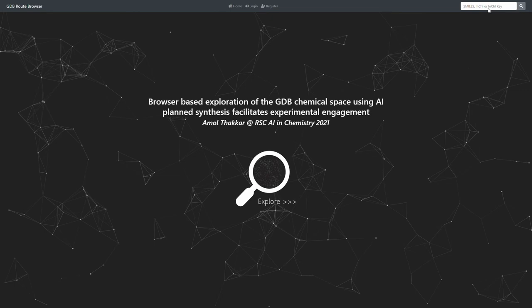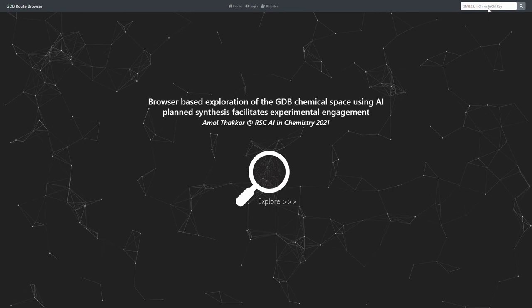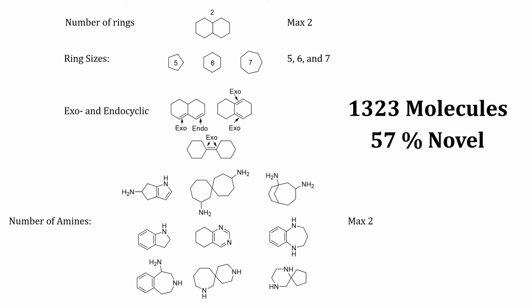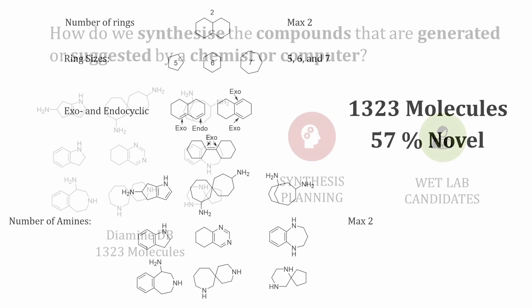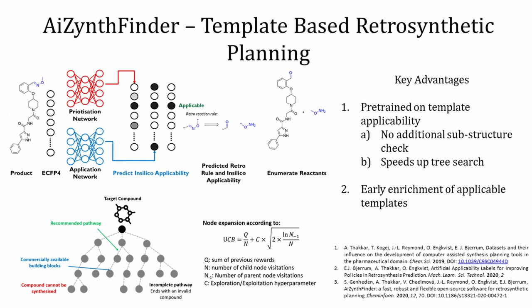My name is Amol Thacker. I'm a PhD student in the Raymond Group at the University of Bern, and today we're going to take you on a journey from the enumeration of chemical space to the assessment of synthetic feasibility using AI. We're going to show you how we use browser-based tools to facilitate experimentation in the wet lab. We've focused our approach on a set of 1,323 diamines, enumerated such that they contained up to two rings with ring sizes between 5 and 7, and up to 2 amines in both exo- and endocyclic conformations. Our primary question becomes how do we select and synthesize the compounds that were generated? To do this, we've applied a template-based retrosynthetic planning tool called AI-SynthFinder, developed in collaboration with AstraZeneca. We prioritize not only the reactions leading to the desired transformation at each step, but whether they can be applied in silico—which speeds up the tree search and enriches the prioritization.